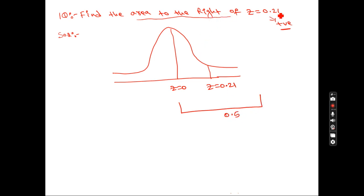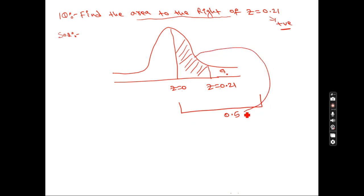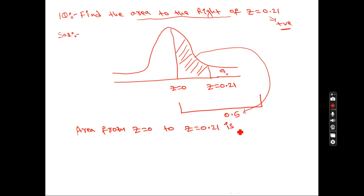What is being asked is the area to the right of z equals 0.21. You already know that the total area from 0 to positive infinity is 0.5. So from 0 to 0.21, we first find that area using the table. The area from z equals 0 to z equals 0.21 — go to the table to find it.